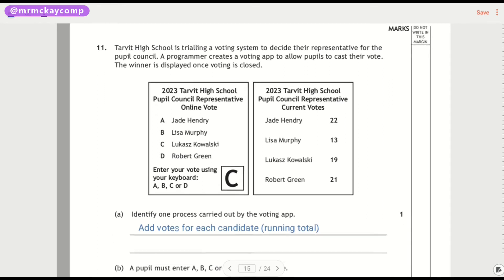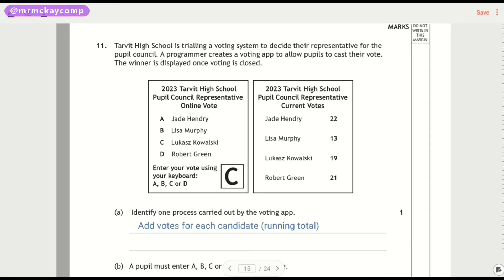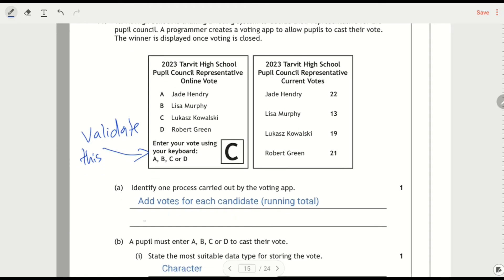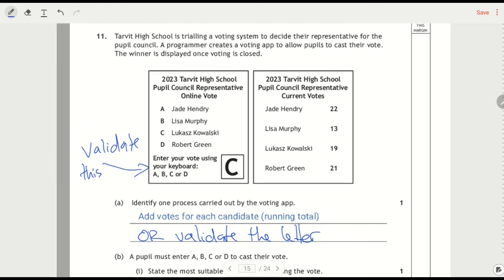Last software development question. This is a voting system where they vote with A, B, C or D and you can hopefully tell that there's then going to be input validation. At some point you're going to have to validate this. Now that could be one of your processes. We'll ask for a process or we could validate. The letter process that I'd written down was add up the votes for each candidate. That would be a process as well. Thinking about what does this program have to do.